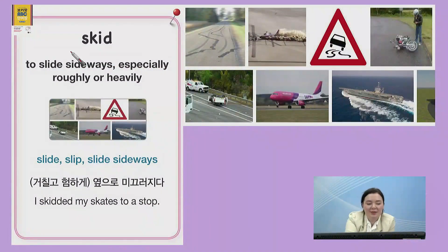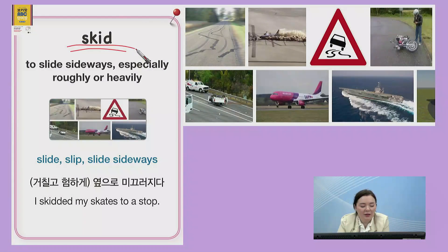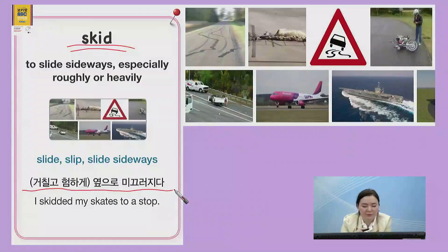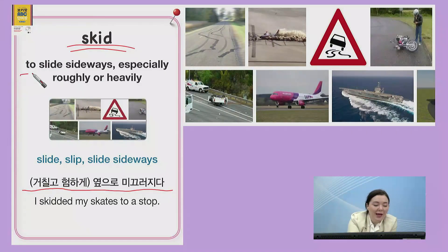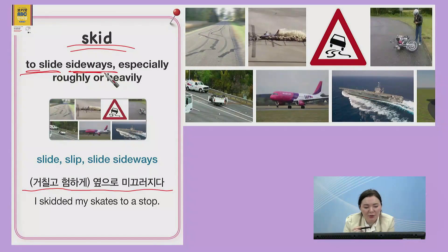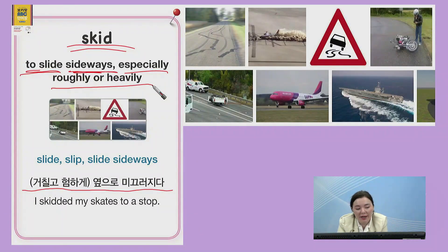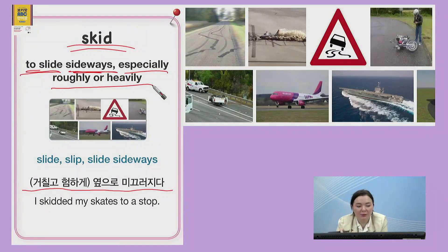The next word is skid. 한국말로는 거칠고 험하게 옆으로 미끄러지다. 영어로 설명하면, to slide sideways, especially roughly or heavily. 거칠고 험하게, 또 무겁게 미끄러지는 거예요. So skid means to slide sideways, especially roughly or heavily.